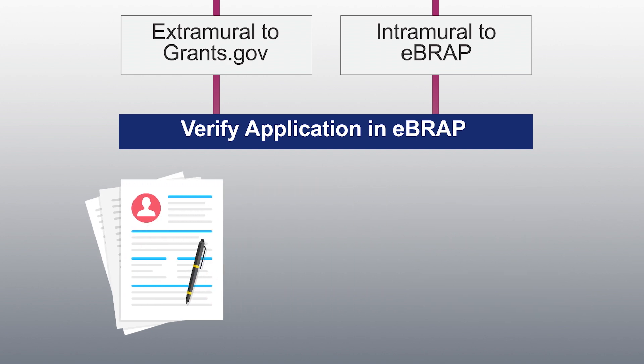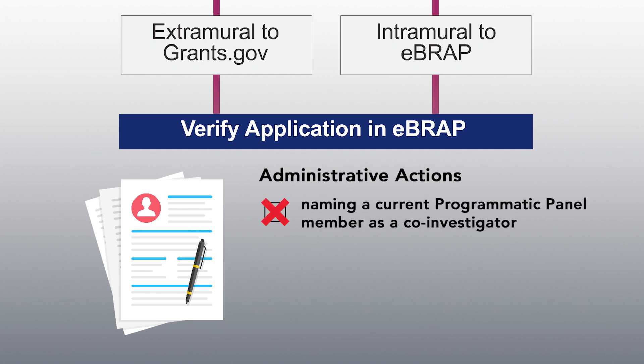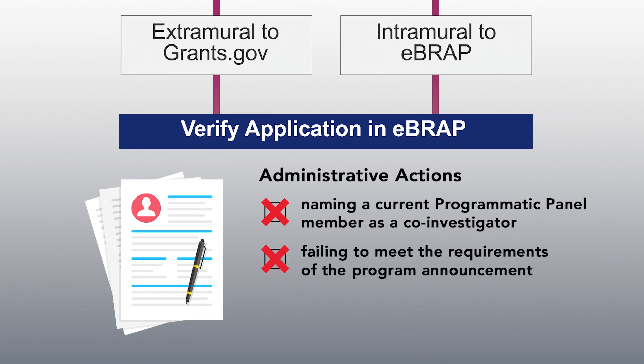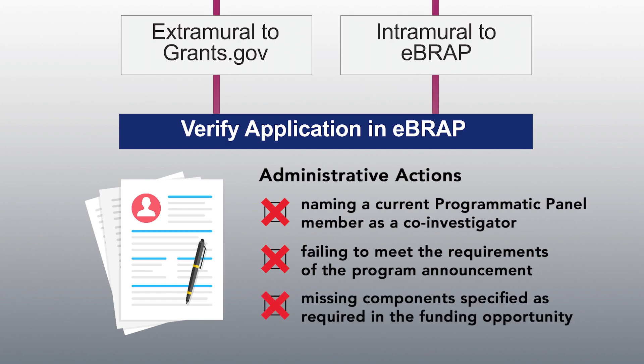Finally, let's highlight some of the key items to check before you submit your pre-applications and applications. First and foremost, you should be familiar with the various administrative actions described at the end of the funding opportunity detailing the reasons that an application may or will be rejected, modified, withdrawn, or withheld. Some of the reasons these actions may be taken include naming a current programmatic panel member as a co-investigator or collaborator, components of the application failing to meet the requirements of the program announcement, and or missing components specified as required in the funding opportunity.